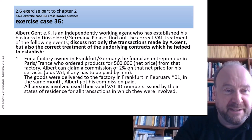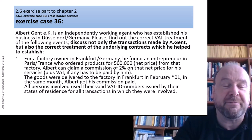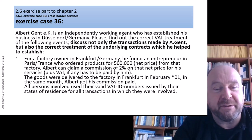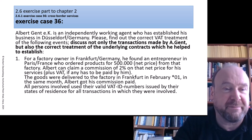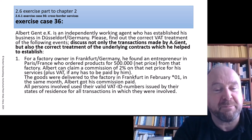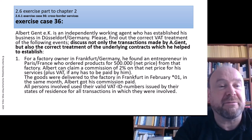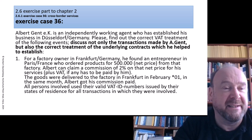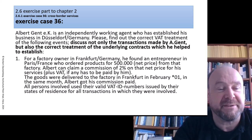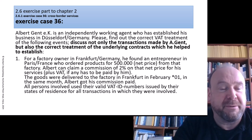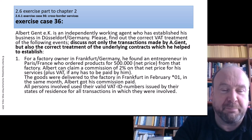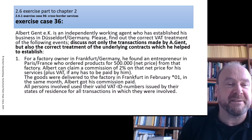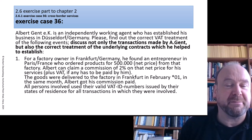Event number one: Albert works for a factory owner in Frankfurt, Germany. He found an entrepreneur in Paris, France, who ordered products from that Frankfurt factory for 500,000 euro net price. Albert can claim a commission of 2% on that net price as his net commission. The goods were delivered by the factory in Frankfurt in February, and in the same month Albert got his commission paid.